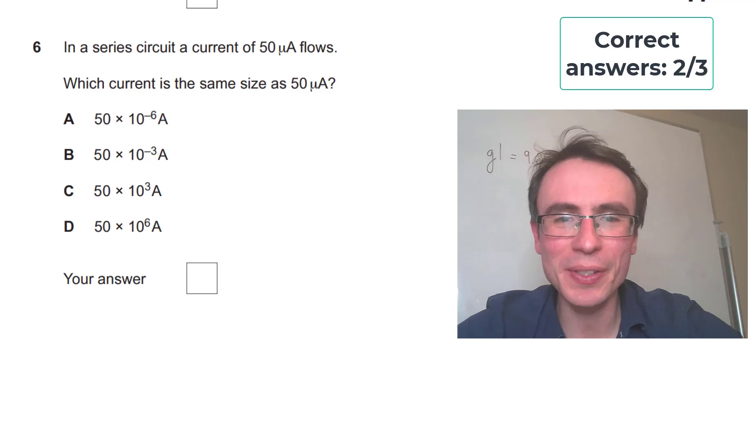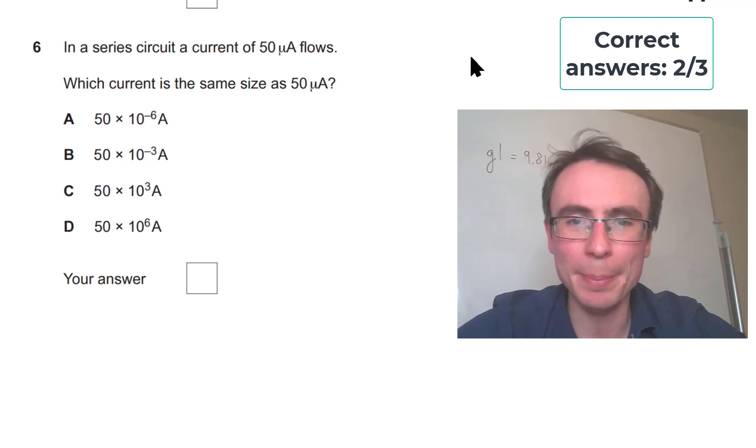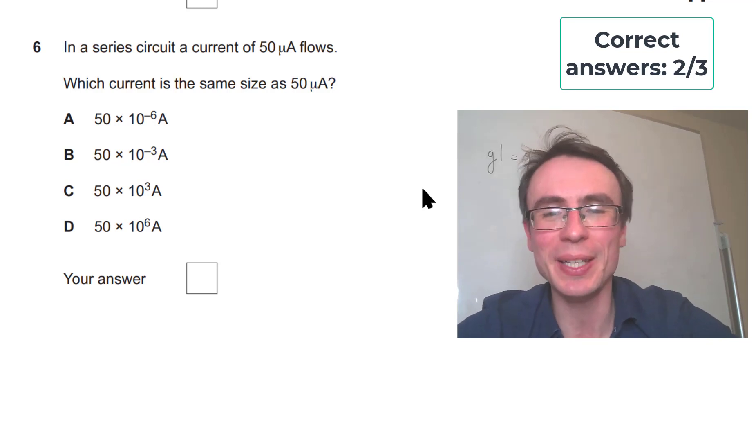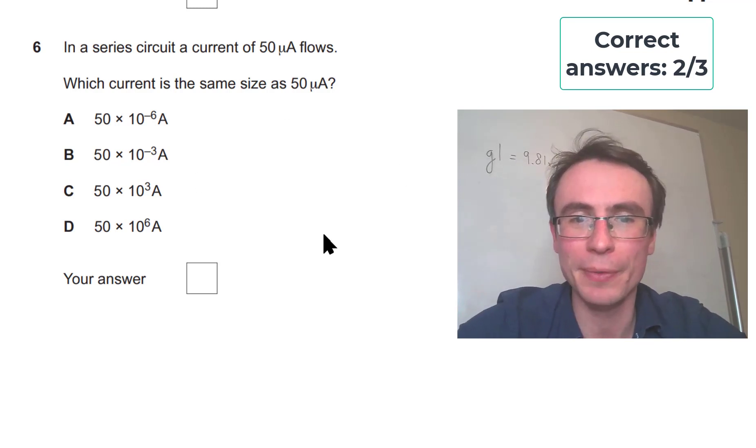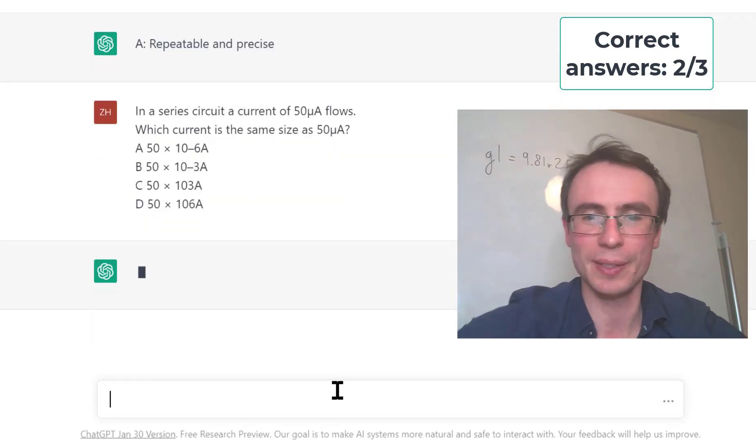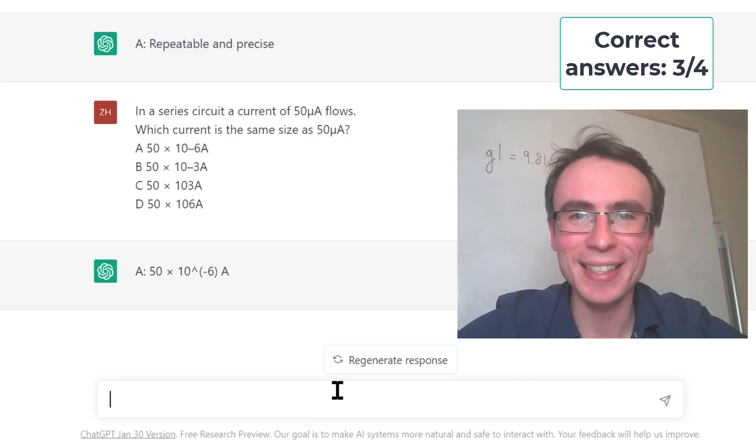Next one, in the series circuit a current of 50 microamps flows. Which current is the same size? So this is just testing us whether we actually know the prefix and that is 50 times 10 to the minus 6 amps. Let's see if ChatGPT knows its prefixes. It does. Correct answer.